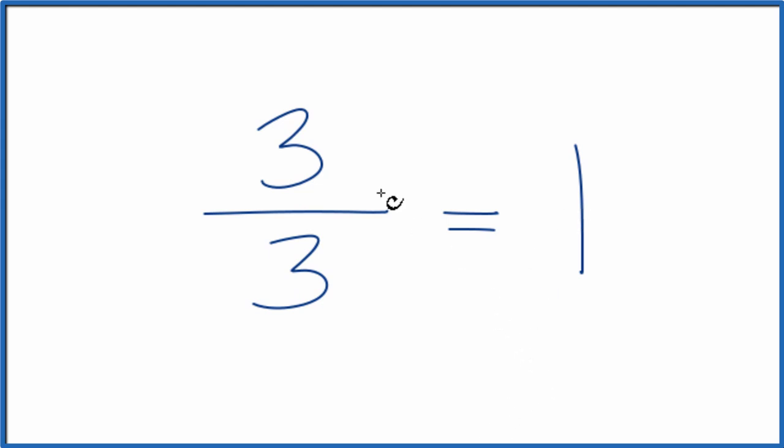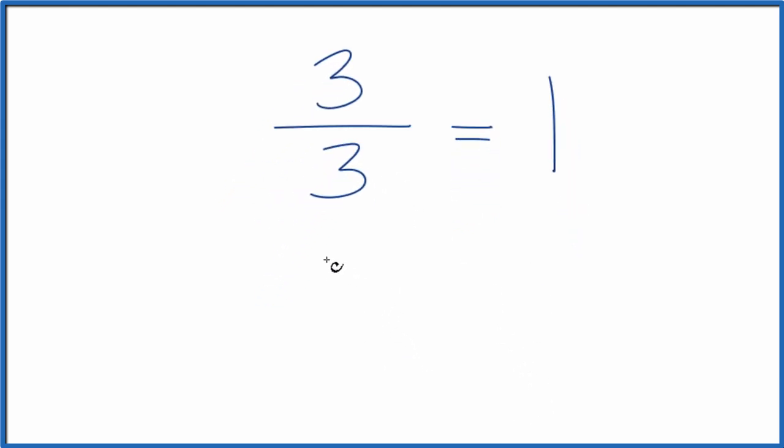And really, any number divided by itself is going to equal 1. Say 27 divided by 27. 27 goes into 27 one time. Or perhaps, if you're doing algebra, x over x, that's going to equal 1.